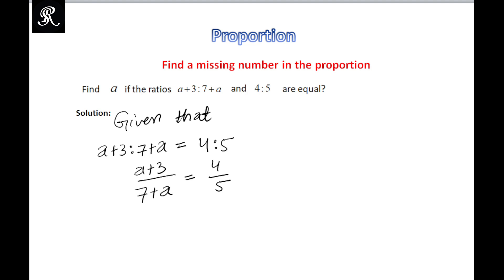So now, as we have discussed in earlier videos, in order to solve this kind of proportional problem where we need to find the missing number, we need to follow three steps. The first step is we need to do the cross multiplication.